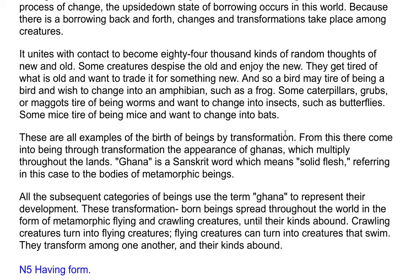These are all examples of the birth of beings by transformation. From this there come into being through transformation the appearance of ganas, which multiply throughout the lands. Gana is a Sanskrit word meaning solid flesh, referring in this case to the bodies of metamorphic beings. All subsequent categories of beings use the term ganas to represent their development. These transformation-born beings spread throughout the world in the form of metamorphic, flying, and crawling creatures; crawling creatures turn into flying creatures, flying creatures can turn into creatures that swim — they transform among one another and their kinds abound.